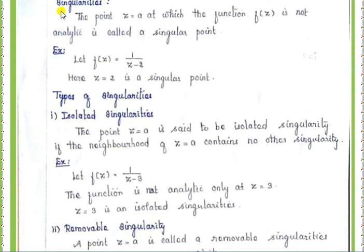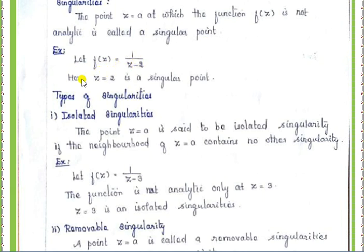Hello everyone. In this lecture I am going to discuss about singularities. The point z equal to a at which the function f of z is not analytic is called a singular point. Analytic means continuous, meaning limit z tends to a of f of z equals some finite value. When replacing z equal to a in f of z gives infinite value, that point is a singular point. For example, f of z equal to 1 by z minus 2: replacing z equal to 2 gives 1 by 0, which is infinite. So z equal to 2 is a singular point.